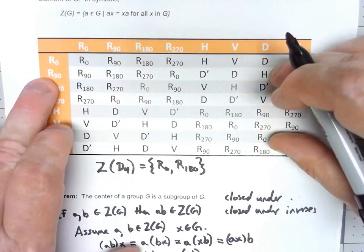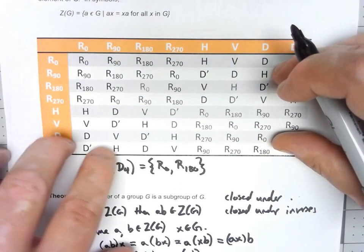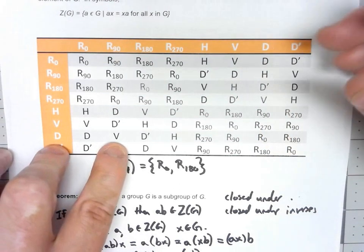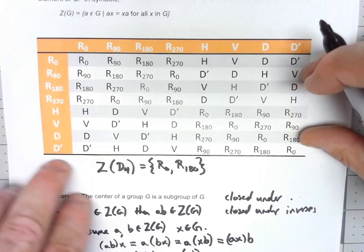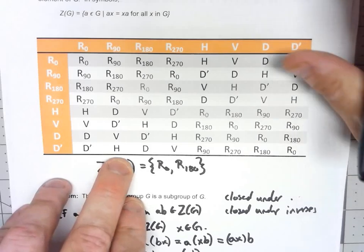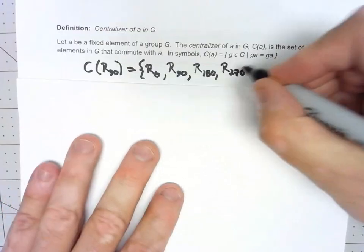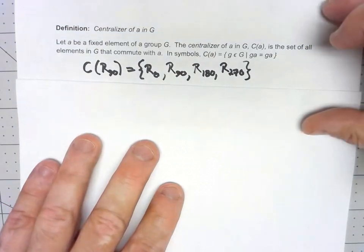R90 times D is H. D times R90 is V. That doesn't commute. R90 times D prime is V. D prime times R90 is H. So none of the other things are in the centralizer of R90. The centralizer of R90 is just those four rotations.